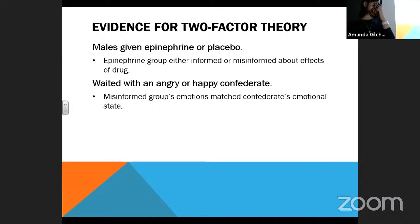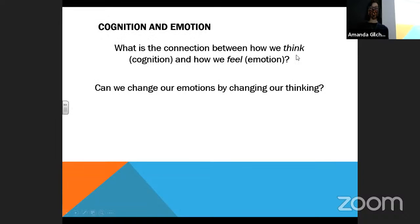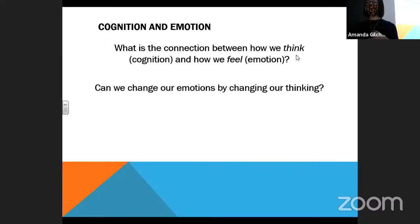I'll talk a little bit more about this spillover in a bit. So let's talk very briefly about the connection between how we think and how we end up feeling. Can you actually change your emotions by changing your thinking? I think on some level you can. I don't think you can do it 100% of the time, but I know that if I'm feeling anxious about something, I try to channel that energy into doing a good job or getting excited about something like a play I'm in.